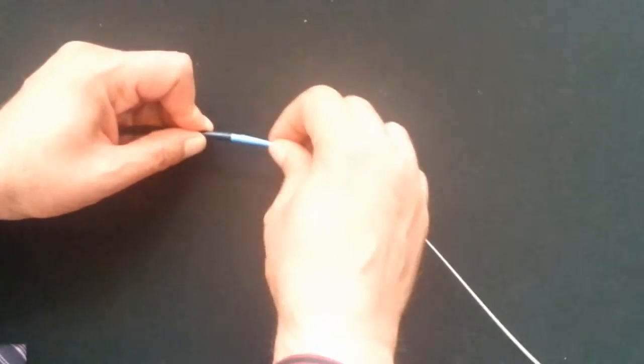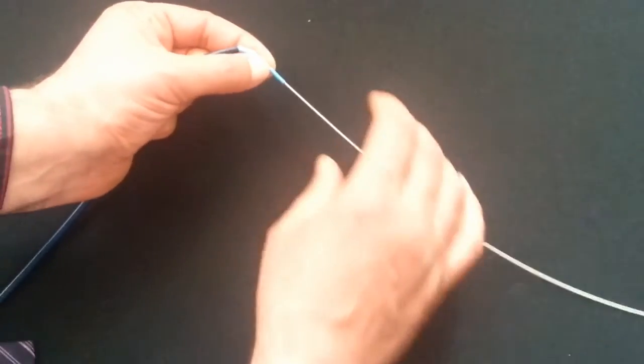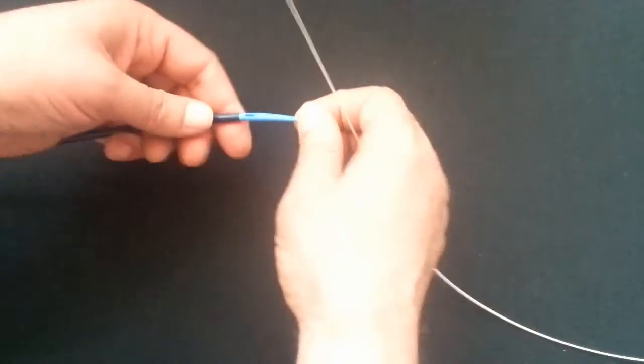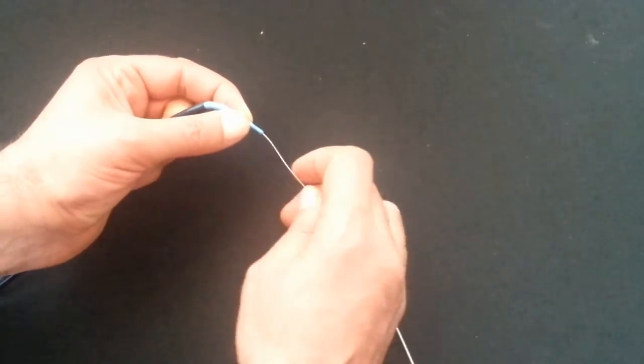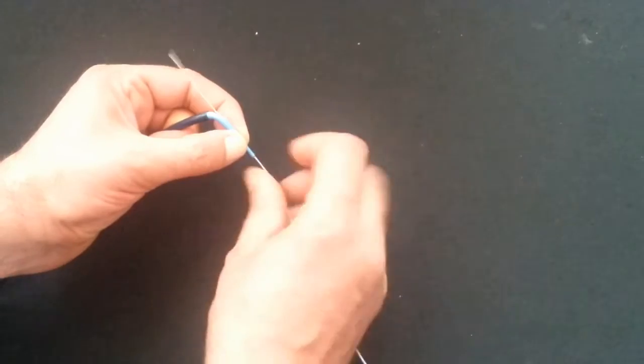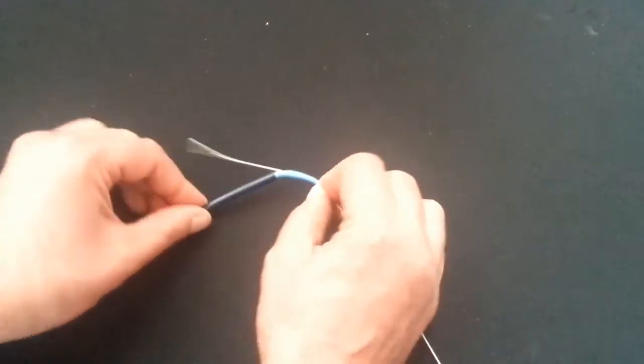The tapered dilator is curved. The egress hole is in the apex of the curve. The guide wire exits the dilator smoothly and quickly.